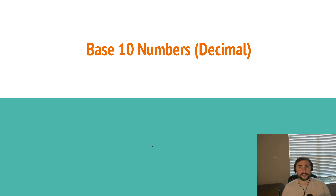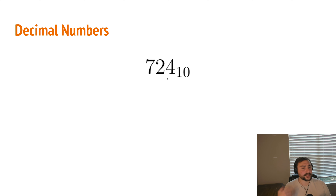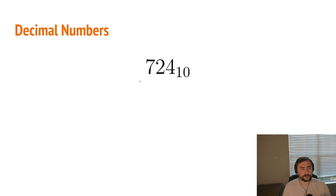A great place to start when talking about binary is with our base-10 numbers, something that we're all very familiar with — just our normal decimal numbers. Here we have a normal decimal number, 724, and because it's a decimal number we say it's a base-10 number. What exactly does this mean? It means that for each of the digits, each digit can be one of 10 possible values — some value between 0 and 9. So we have a 4 in the ones place, a 2 in the tens place, and a 7 in the hundreds place. But where exactly do the ones, tens, and hundreds places come from?